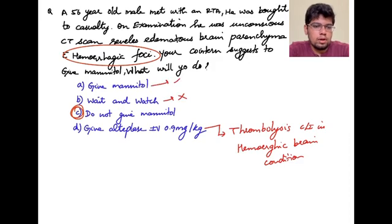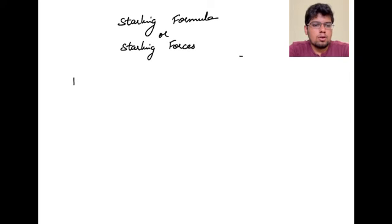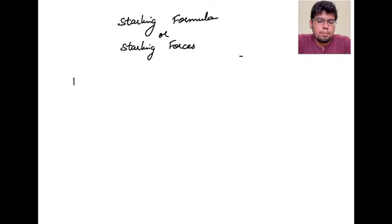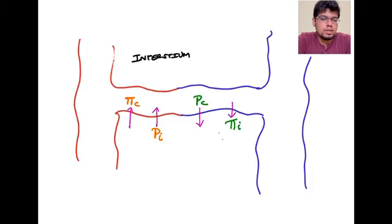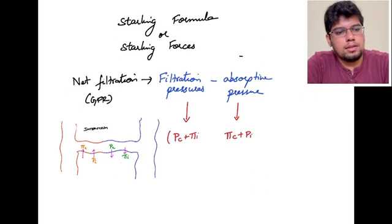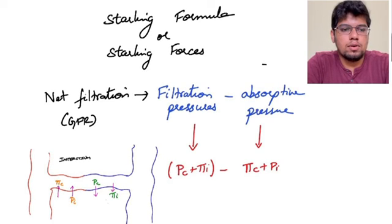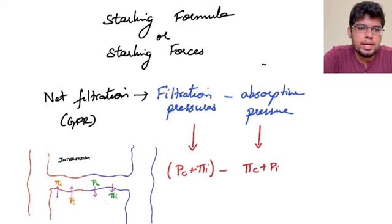Coming to GFR in the kidney: the glomerular filtration rate is governed by these pressures, known as Starling formulas or Starling forces. A problem-based question is frequently asked from these Starling forces. This is not the Starling law usually seen in ventricles; these are Starling forces. The formula is: net filtration (GFR) equals filtration pressure minus absorptive pressure.